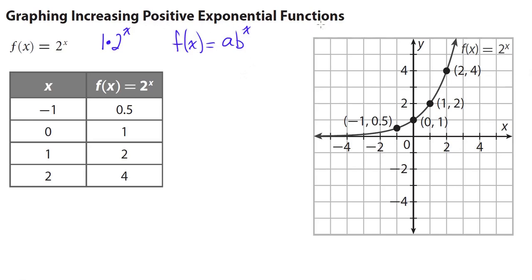In order to have a positive exponential function — one that graphs above the x-axis — your a value needs to be positive, so a must be greater than 0. What makes a function increasing is that the b value must be greater than 1. Since our a value is 1 (positive) and our b value is 2 (greater than 1), this is an increasing positive exponential function.